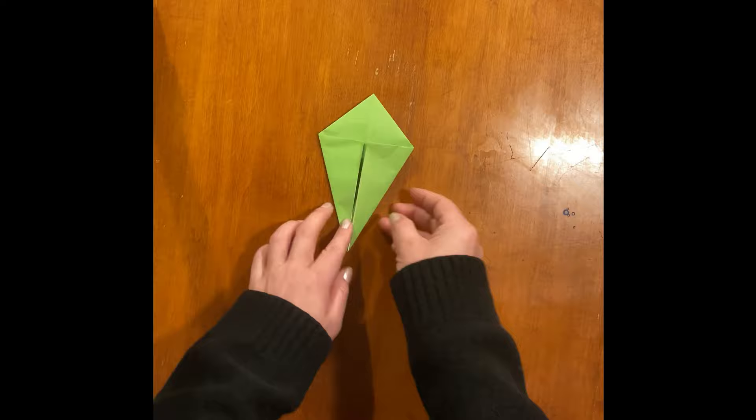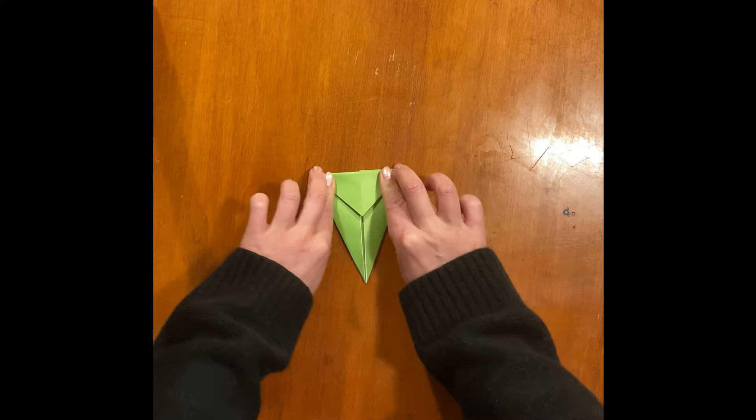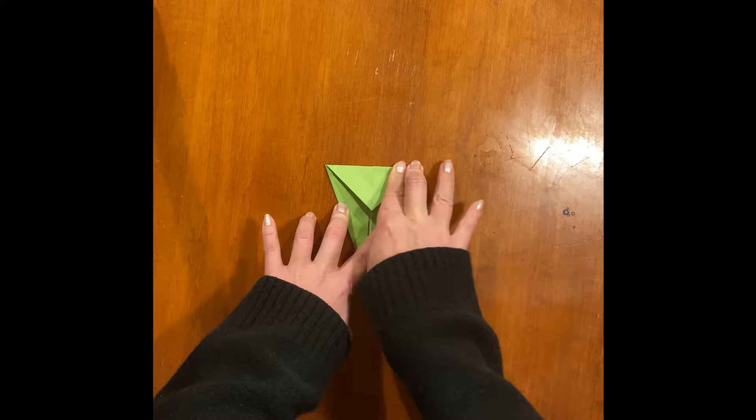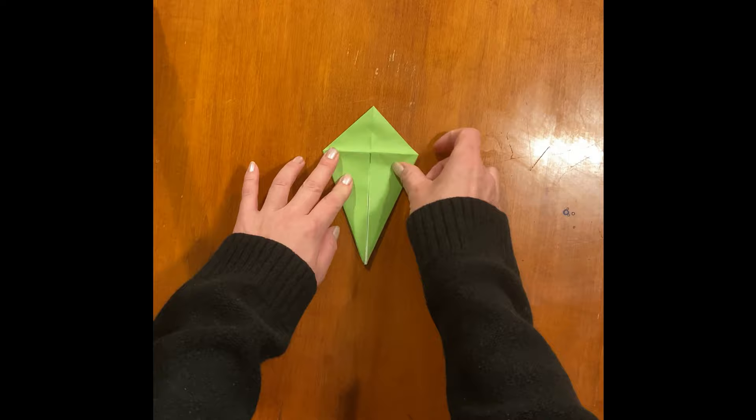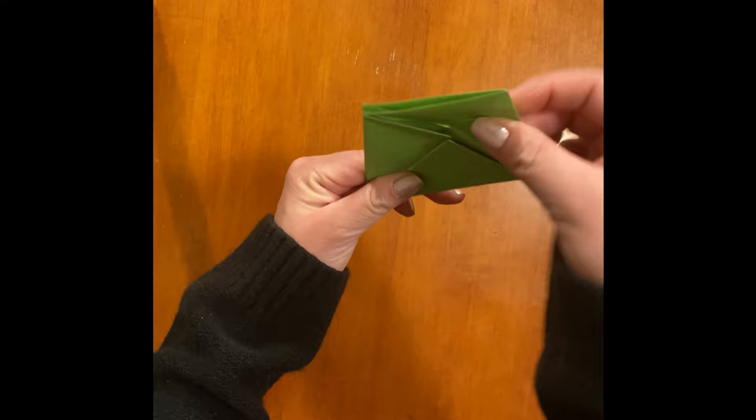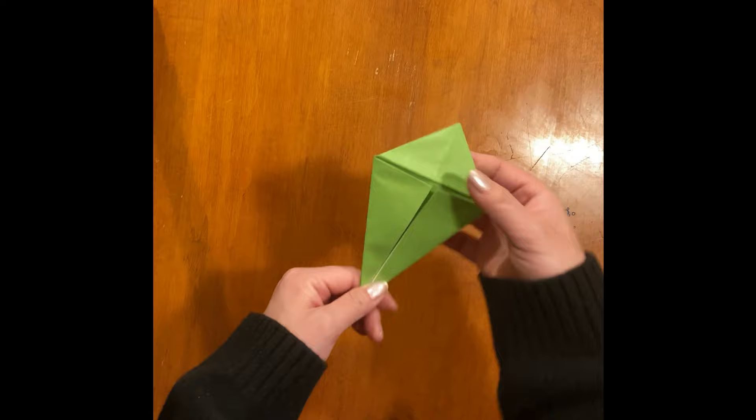Now you have a little ice cream cone shape. You will fold this top where you just folded, and flip the other side as well. It's like an ice cream cone, bend it for both sides.